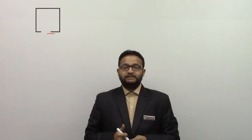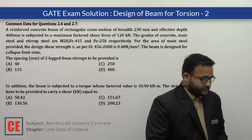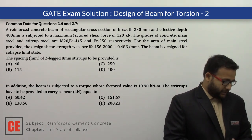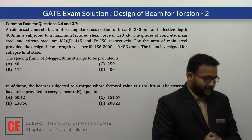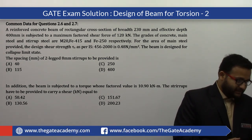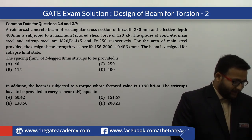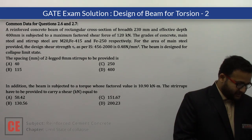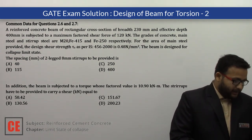Today we will solve a problem from GATE 2008 worth 4 marks total. There were two problems with common data. The problem: a reinforced concrete beam of rectangular cross-section, width 230 mm and effective depth 400 mm, is subjected to a maximum factored shear force of 120 kN. The grades of concrete, main steel, and stirrup steel are M20, Fe415, and Fe250 respectively. The design shear strength as per IS 456:2000 is 0.48 N/mm².